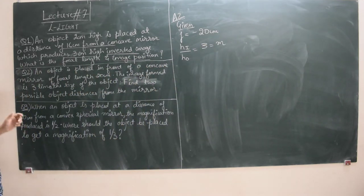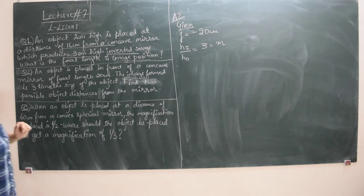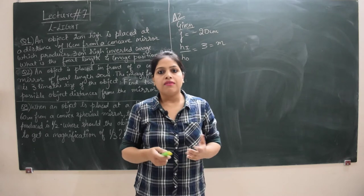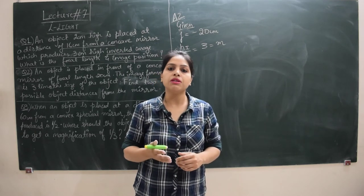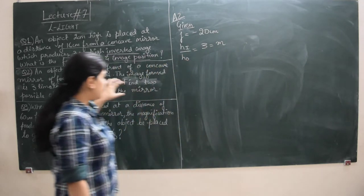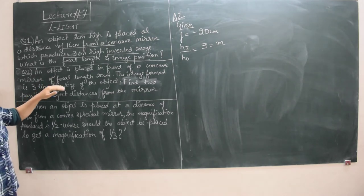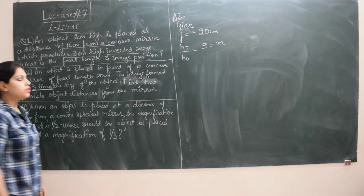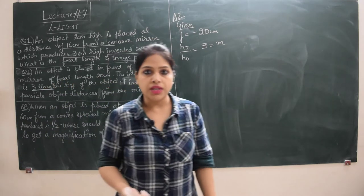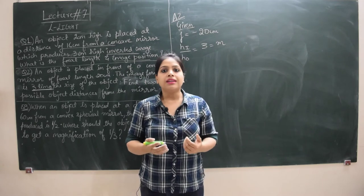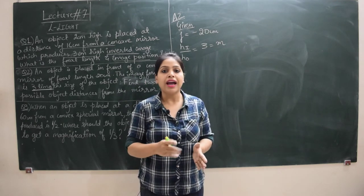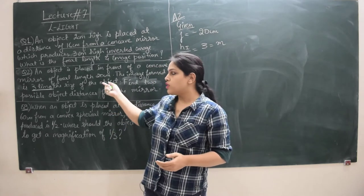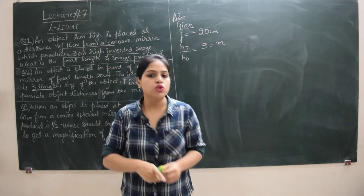Find two possible object distances from the mirror. Remember, magnification also follows its sign convention: when the image formed is virtual and erect, magnification is positive; when the image is real and inverted, magnification is negative. In this question it is not mentioned whether the image is inverted or erect, real or virtual — it simply says the image is 3 times bigger. For a concave mirror, a magnified image can form on the real side, and also on the virtual side when the object is placed between F and P. Since the question does not specify, we solve for both cases.